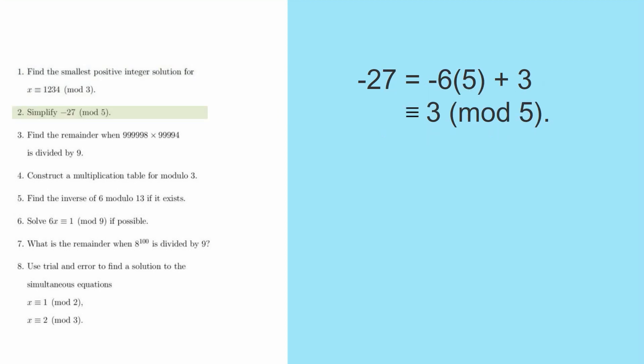When we go to question 2, we see that we can apply everything in the same way for negative numbers. So this time we're dealing Mod 5. So negative 27 is equal to negative 6 times 5 plus 3. And we then say that that's equivalent to 3 Mod 5.